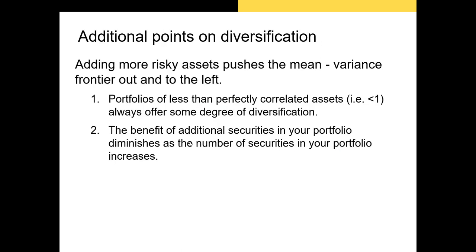The lower the correlation between two securities, the greater the diversification benefit. Most people don't just have two stocks or two ETFs in their risky portfolio. As we construct portfolios with dozens of securities, the marginal benefit of diversifying into another security decreases. Eventually, the diversification benefit of adding another stock or security to the portfolio becomes somewhat negligible.